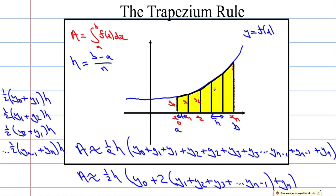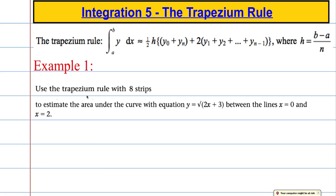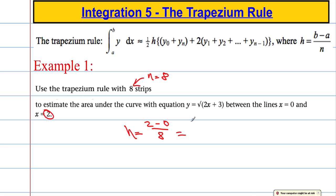Let's look at an example. We're asked to use the trapezium rule with eight strips — so n equals 8 — to estimate the area under the curve y equals the square root of (2x + 3), between x equals 0 and x equals 2. The first thing we calculate is h: h equals (b − a) / n = (2 − 0) / 8 = one quarter. So each strip is 0.25 wide.